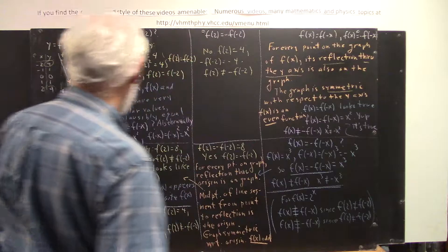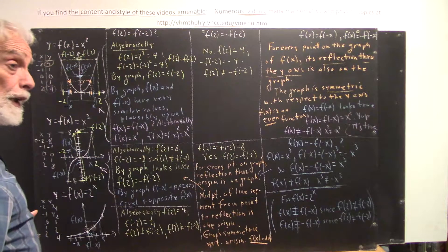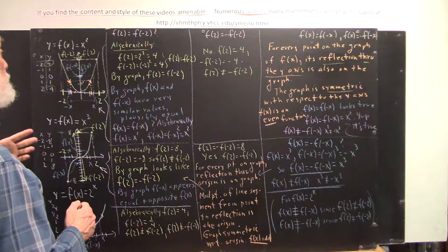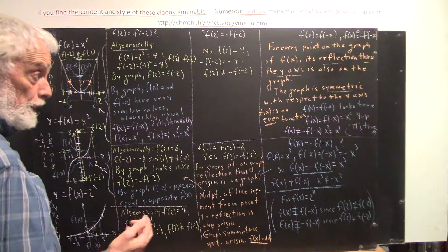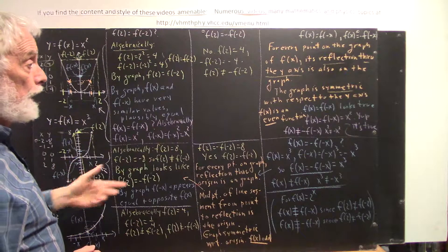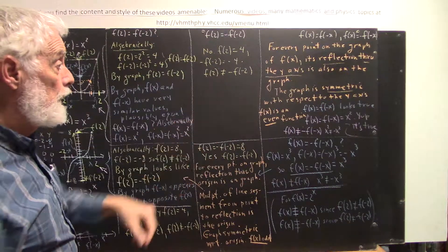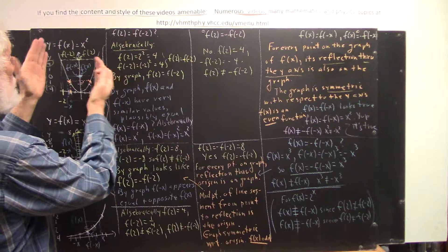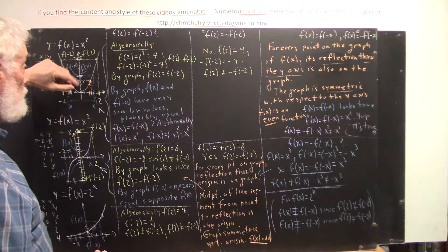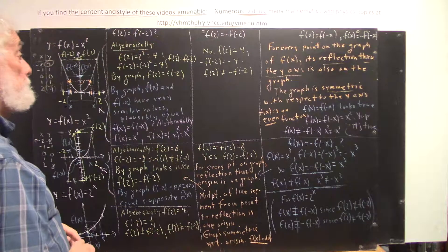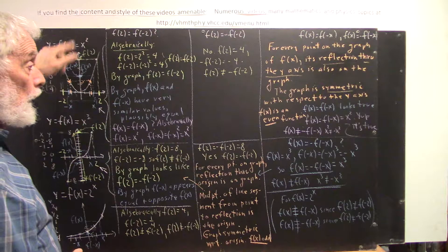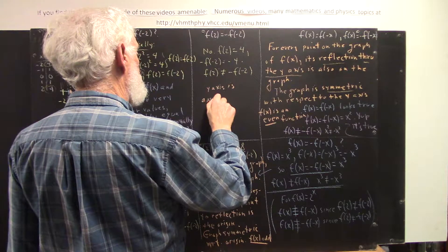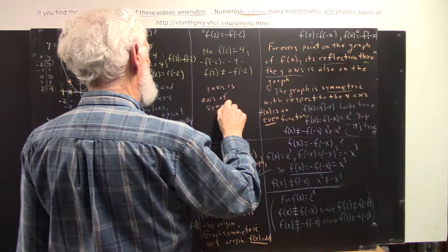This is what we mean by reflection. Every point on one side has its reflection on the other. So the graph on one side is the reflection of the graph on the other side. Another way to say the same thing is that the graph is symmetric with respect to the y-axis. The graph is the same on this side as it is on this side. If we were to fold the graph over on the y-axis — fold this side over onto this side — this half of the graph would be right on top of the other half. The two would coincide. So we say there's a symmetry, and the y-axis is the axis of symmetry.